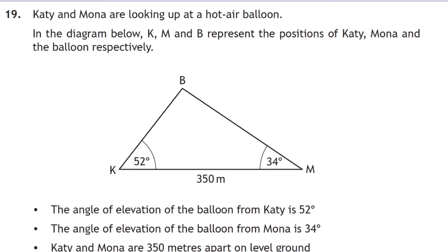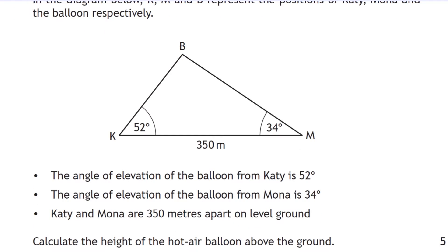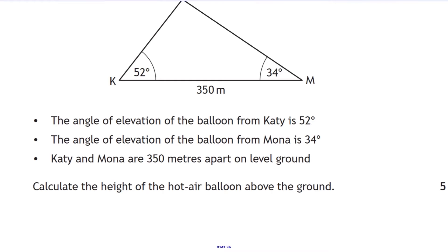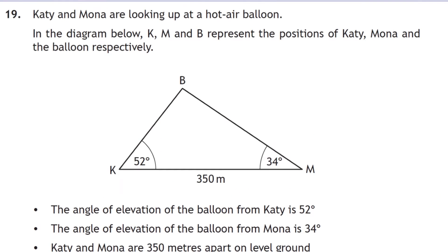Question nineteen: Katie and Mona look up at a hot air balloon at angles of elevation of 52° and 34° respectively. The distance between them is 350 metres. We need to calculate the height of the balloon. First, find the third angle in the triangle: 180 − 52 − 34 = 94 degrees.